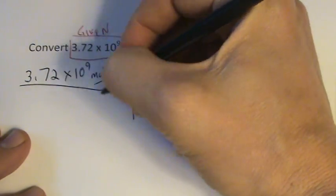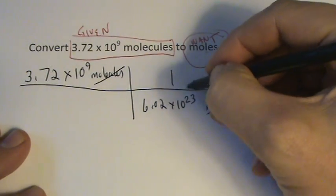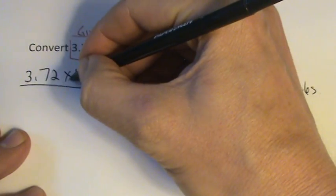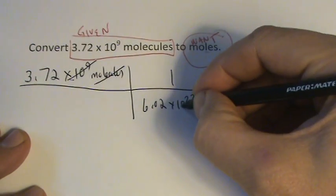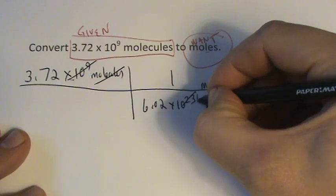We can cancel the 10 to the ninth out, but we'll have to subtract 9 from this. So if we cancel that out, we would get 10 to the 14th.